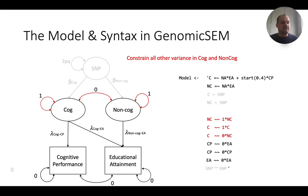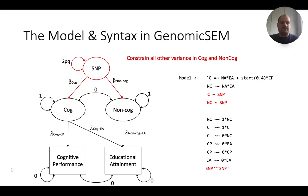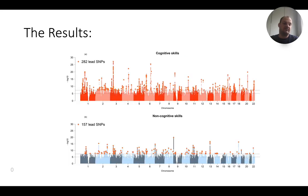Later when we go into assumptions, we can go back and check whether it matters that we assume zero correlation — which is a good thing to do, checking all your assumptions. We then regress the latent variables COG and non-COG on the SNP, and repeat this for every SNP in the genome. This gives us a latent GWAS of cognitive and non-cognitive contributions to educational attainment.